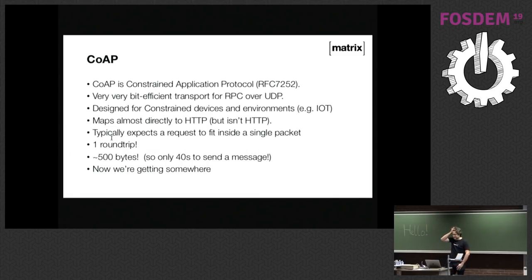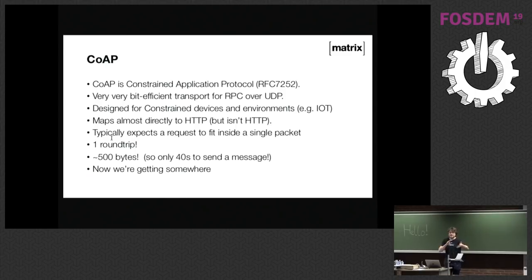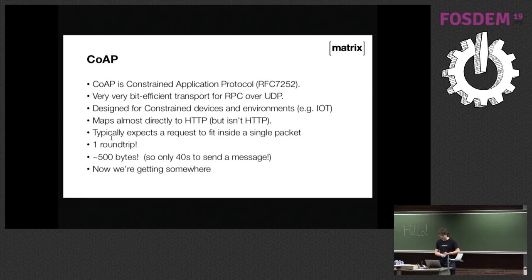So we started looking at CoAP. CoAP isn't that well known outside of the IoT space — it was written around 2014, it's RFC 7252, and it's designed for very bit-efficient transport of RESTful APIs over UDP. It looks and smells a lot like HTTP, except clients and servers can talk bidirectionally — your server can do a UDP hit to a client just as the client can hit the server, so you don't need WebSockets. The base header is about four bytes plus a sequence number and message IDs which can be as small as you like — designed for very constrained networks and devices.